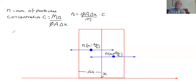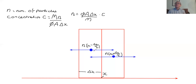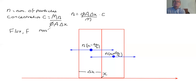Now we actually get to Fick's law. Fick's law says that, even though we have particles moving at random, there is in fact a net flux. The flux F is a mass that moves per unit area of the porous medium per unit time.